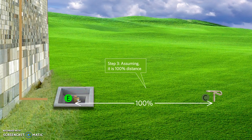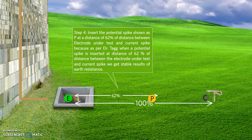Now insert the potential or the voltage spike at a distance 62% of 30 meters between the electrode and the current spike. As per Dr. Tagg, when a potential spike is inserted at a distance 62% of the total distance between the electrode and the current spike, we get stable results for earth resistance.